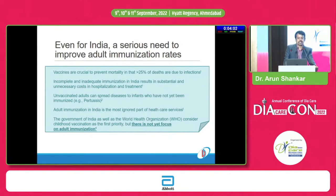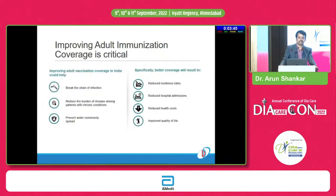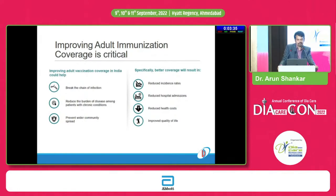We are more aware of pediatric immunization, but when we discuss adult vaccination, many patients don't accept that they require these vaccinations to prevent infections that lead to hospitalization, increased mortality, or morbidity. Improving adult vaccination coverage in India could help break the chain of infection, reduce disease burden among patients with chronic conditions, prevent wider community spread, and reduce incidence rates, hospital admissions, health costs, and ultimately improve quality of life.